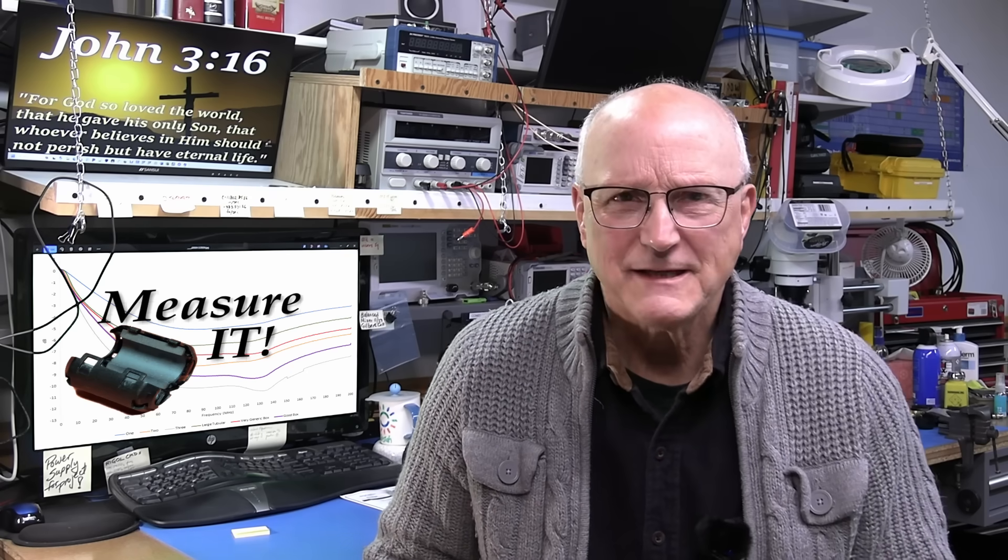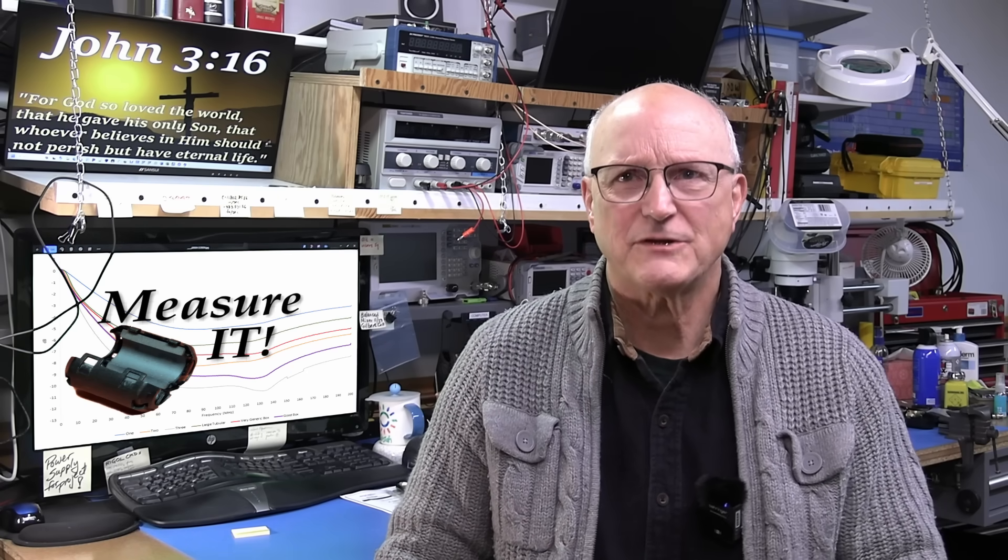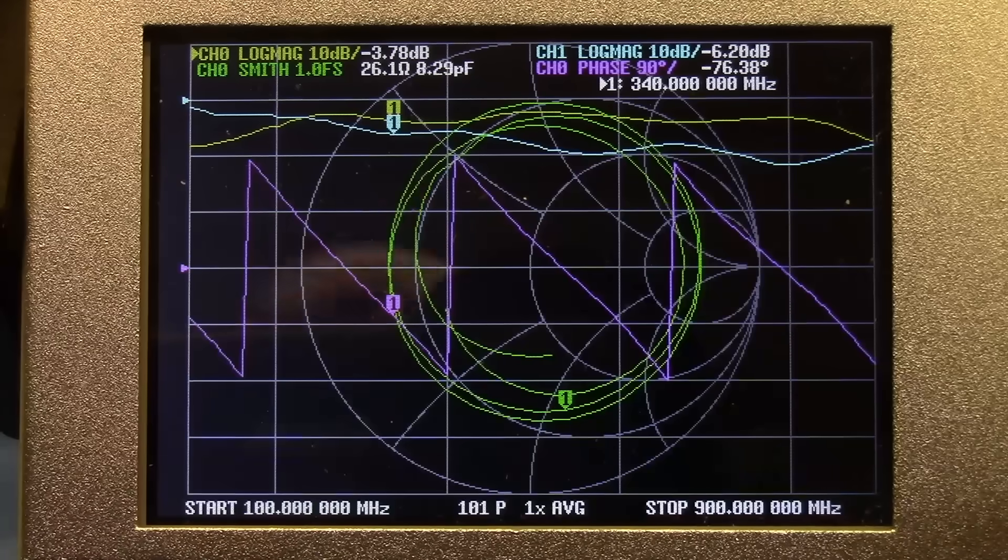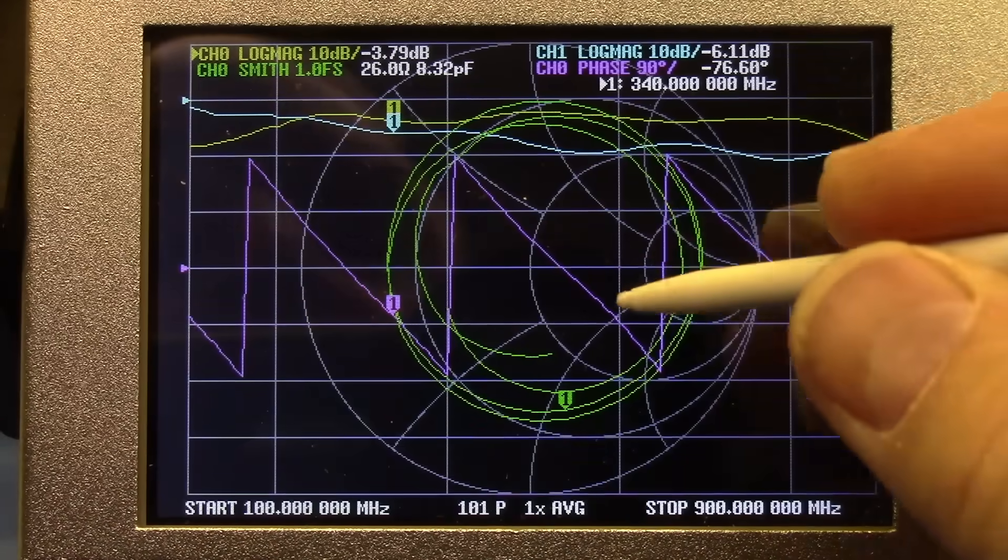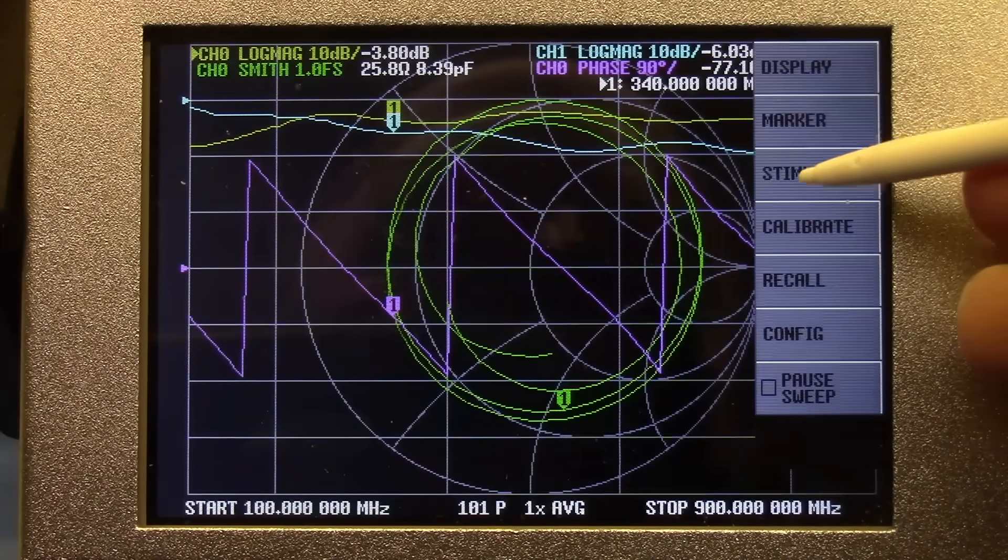Now, let's get the nano VNA ready for measurement. To get the nano VNA ready for the measurement, our first step is to set the frequency limits of our measurement. For my test, I set them from 100 kilohertz to 200 megahertz.